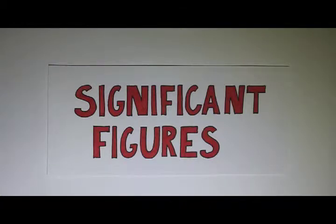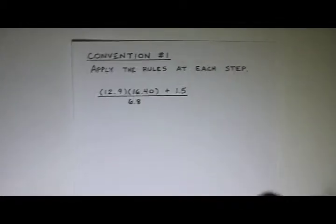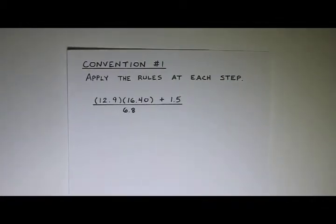We've been talking about significant figures. What happens if you have a multi-step calculation? It turns out there's two conventions for how to handle it. Let's look at the first convention. The first convention says you apply the rules at each step.